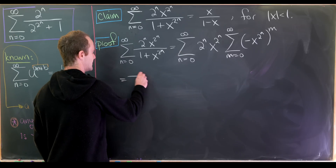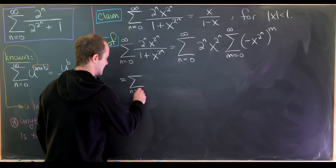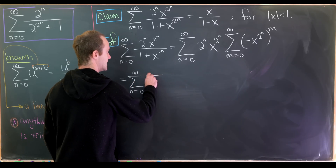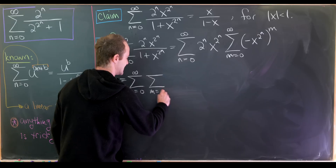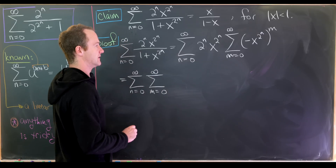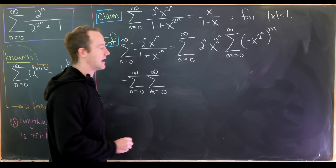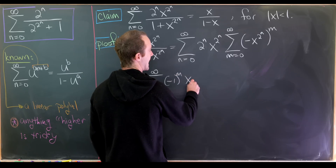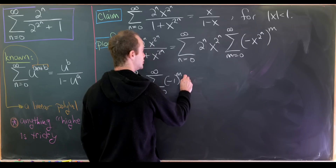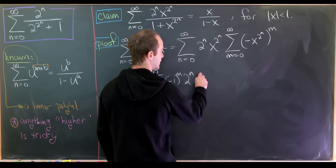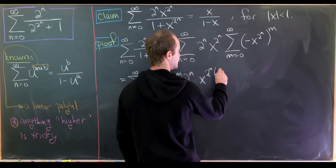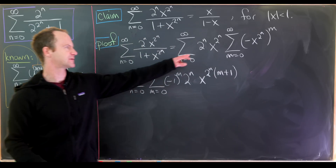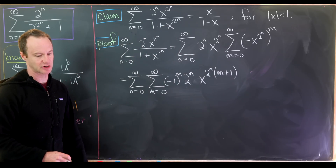Let's put this together. We'll have the double sum — the outer sum is n going from 0 to infinity and the inner sum is m going from 0 to infinity — and we'll be left with minus 1 to the m, times x to the 2 to the n, times x to the power 2 to the n times the quantity m plus 1. That comes from combining those two x terms.